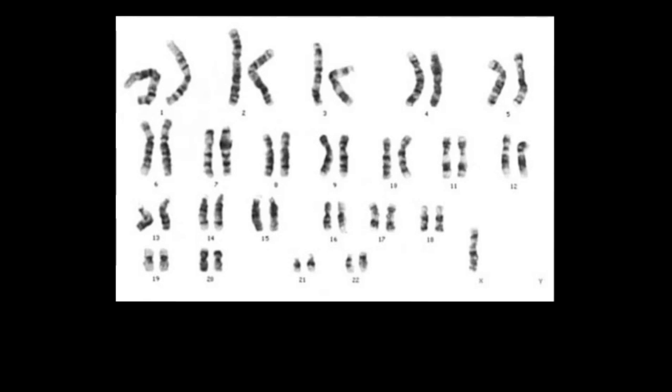Here's another example and in this one you can see all the chromosomes in pairs except for the sex chromosomes. In that pair there is only an X. Another X or Y is missing.